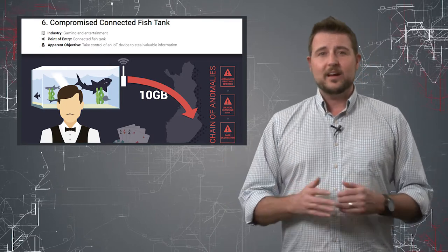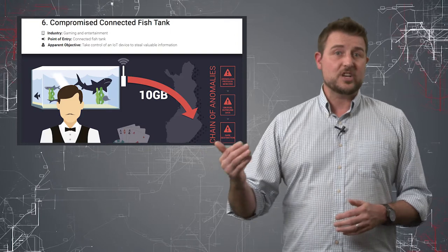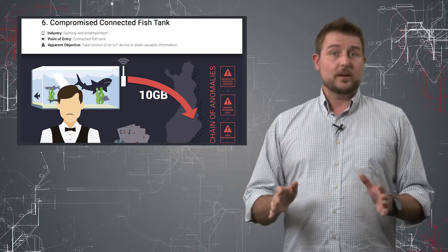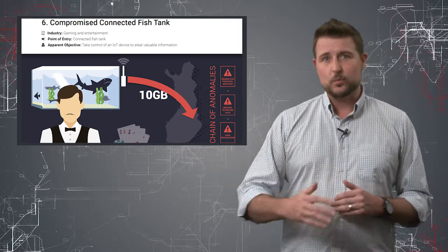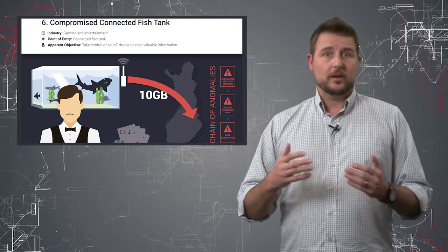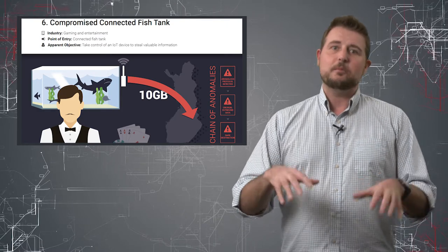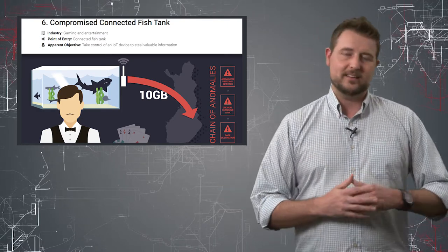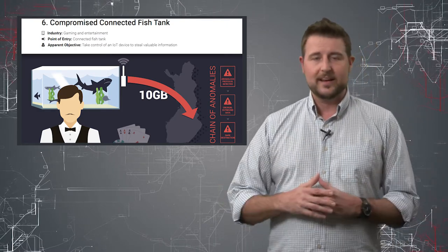They basically saw it connecting to some sort of Finnish IP address and it shared up to 10 gigabytes of information with that Finnish IP address. And apparently they're claiming they were able to use this fish tank as kind of a bastion host to hijack the casino network and exfiltrate data.